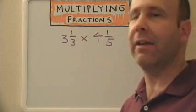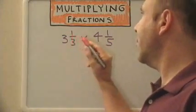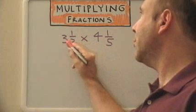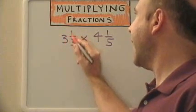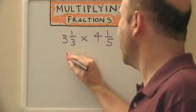So let's go ahead and do that. For three and a third, we take the three, multiply it by three, which is nine, add one, so we get ten-thirds.